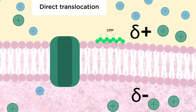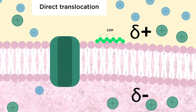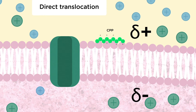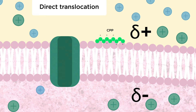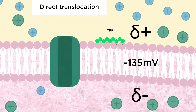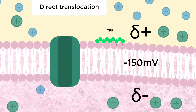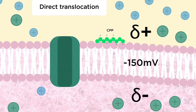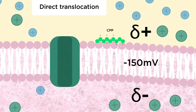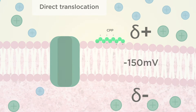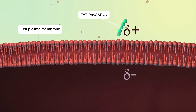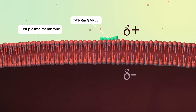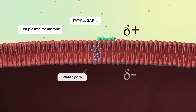The membrane potential therefore goes further down, reaching very negative values — minus 150 millivolts and below — a state called megapolarisation. Megapolarisation triggers the formation of water pores that the CPPs use to enter cells.